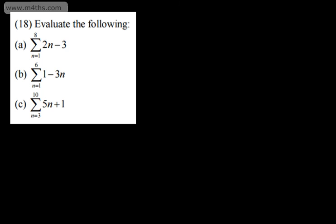In this video, we're going to continue our work with arithmetic series and look at Sigma notation. This is question 18, and we're asked to evaluate the following. In part A, we have the sum from n equals 1 to n equals 8 of 2n minus 3. Sigma notation is Greek for sum.